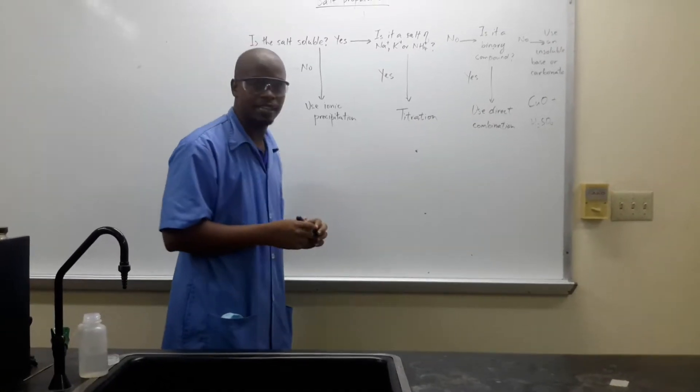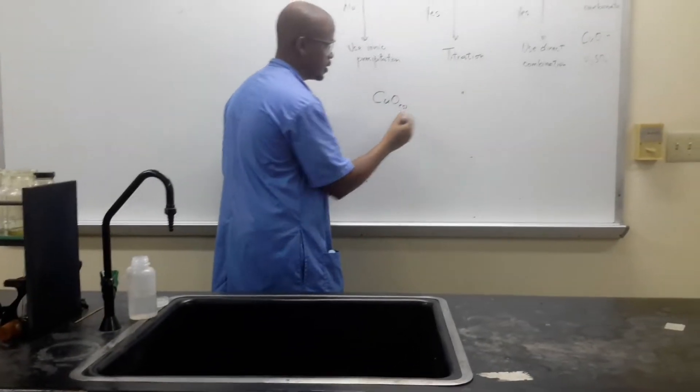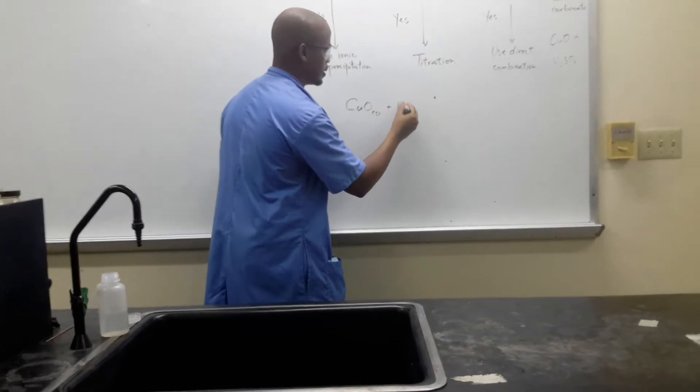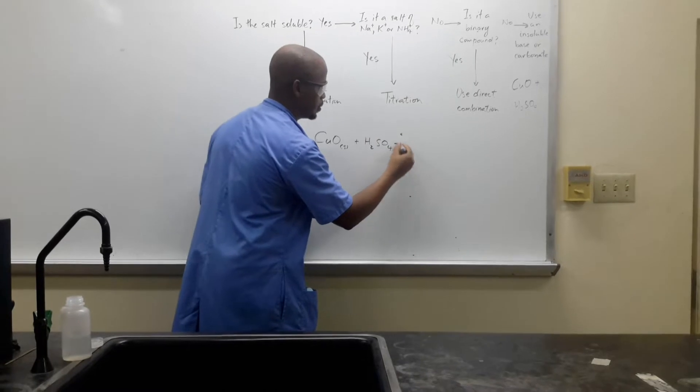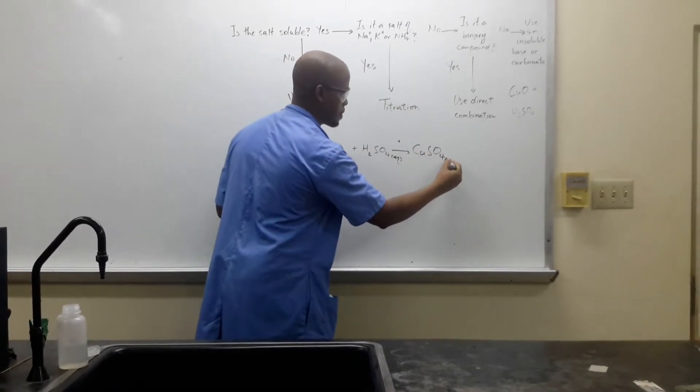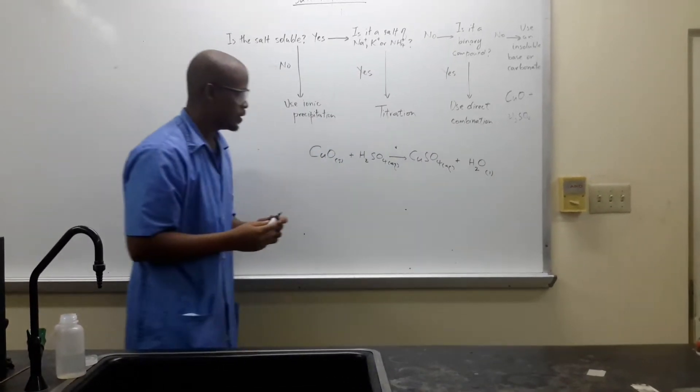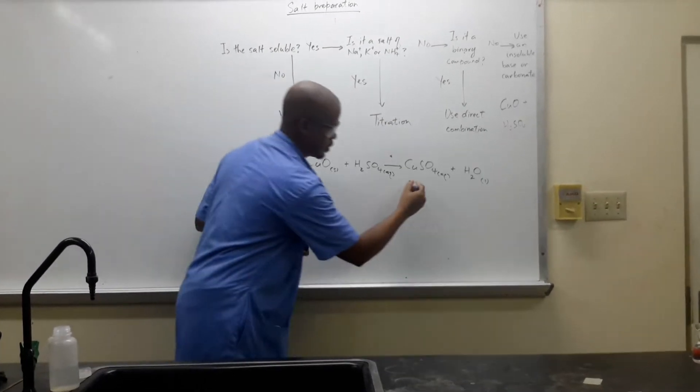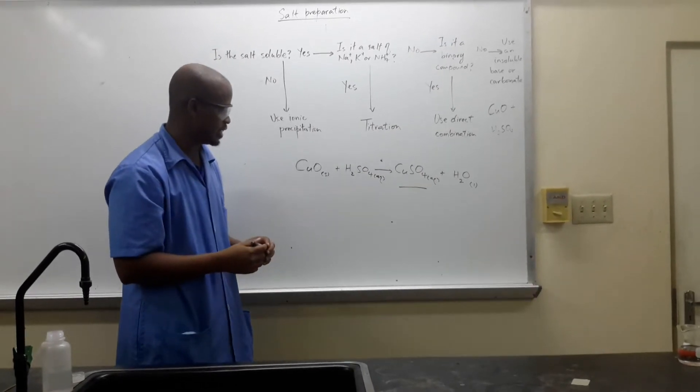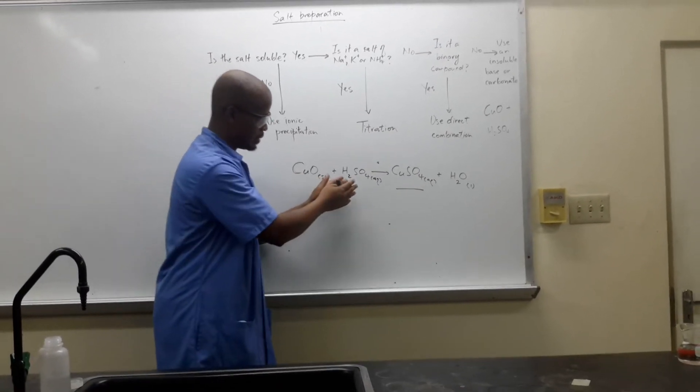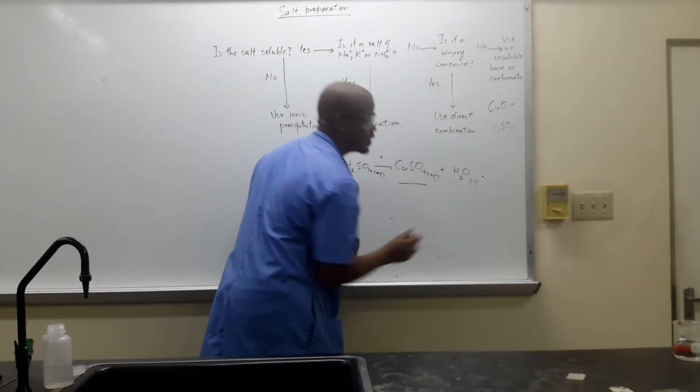The equation for this reaction: we're using copper oxide, which is solid, so we're going to put it as S, and this is going to react with sulfuric acid. This will give us copper sulfate and water. And again, this is a neutralization reaction. Base, acid, salt plus water only. Full stop, nothing else.